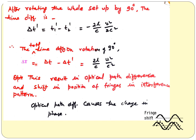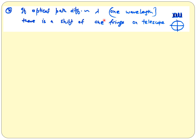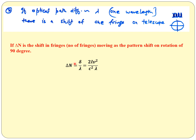This total time difference results in an optical path difference. The optical path difference is C · ΔT, which gives the distance denoted by delta. If the optical path difference equals one wavelength lambda, there is a shift of one fringe on the telescope. Dividing the total path difference by lambda gives the total shift in number of fringes: ΔN = Δ/λ = 2LV²/(C²·λ).